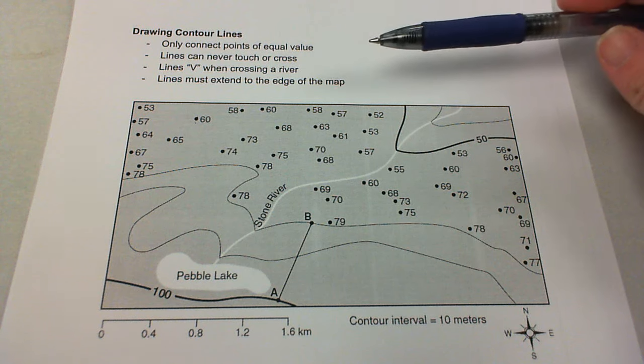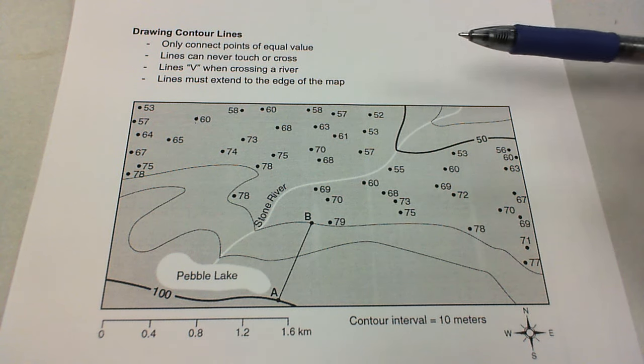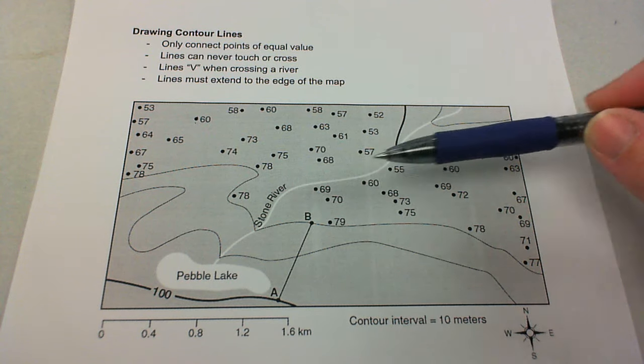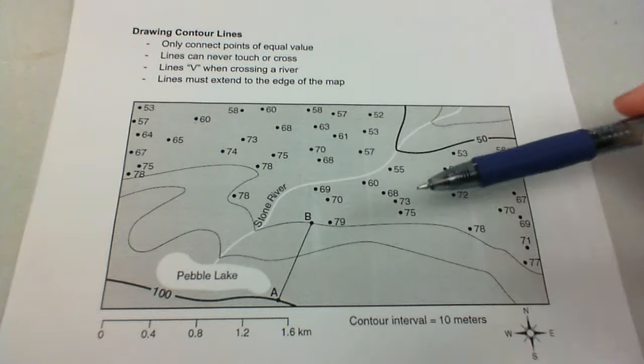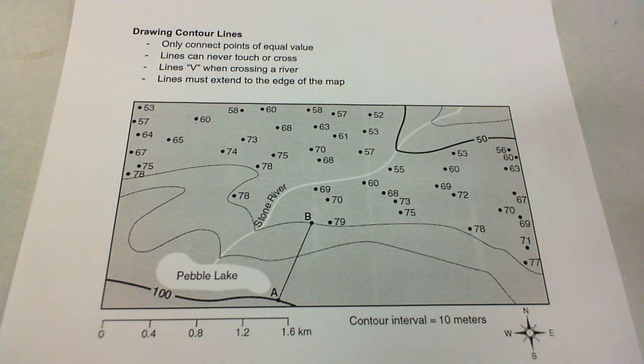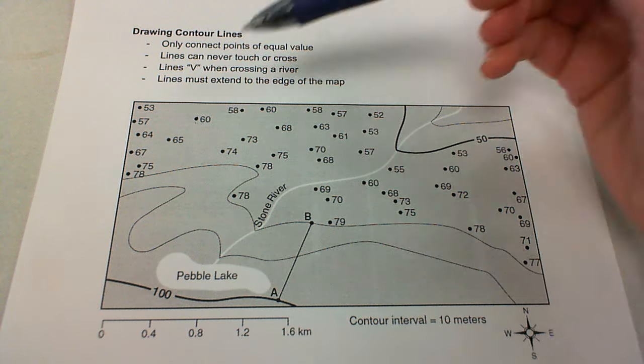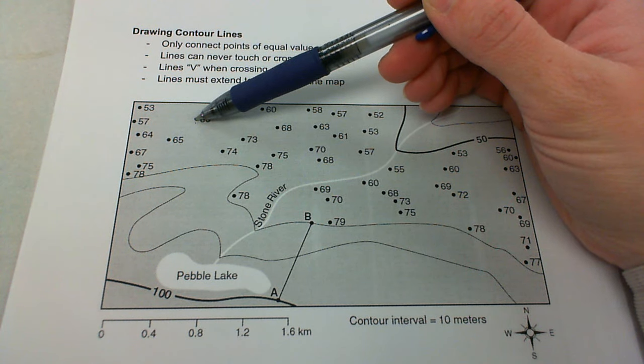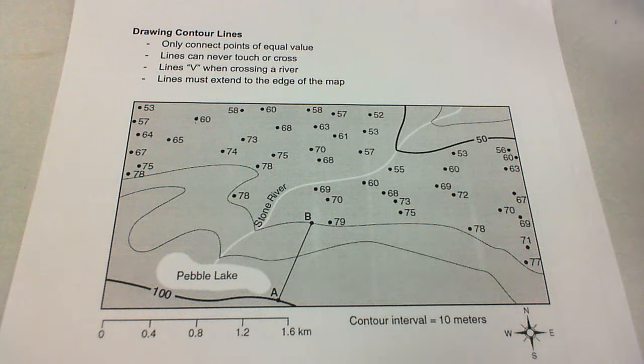When the contour lines cross a river or a stream, they V. So you can see that right here, they're V-ing as they cross this river. And they also have to go to the edge of the map. So if we're starting with this 60 right here, you can't start at this point. You have to go to the edge of the map and then extend it to the edge of the map on the other side.